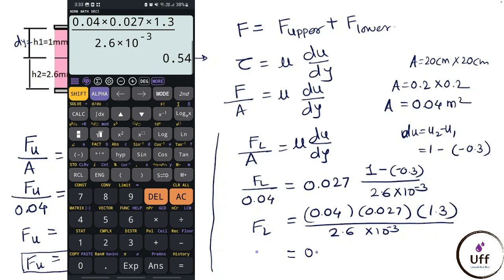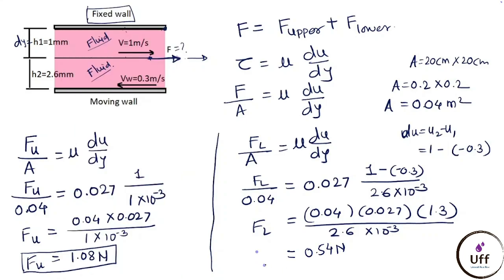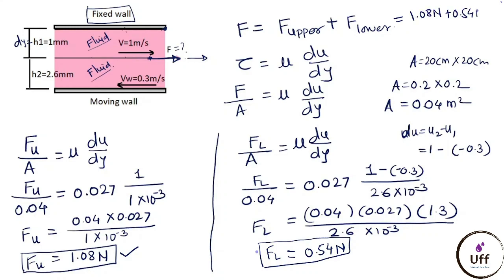The force on the lower side of the plate is 0.54 newton. Adding the upper and lower forces: total force = 1.08 + 0.54 = 1.62 newton. This is the final answer for the force required to maintain the plate's motion.